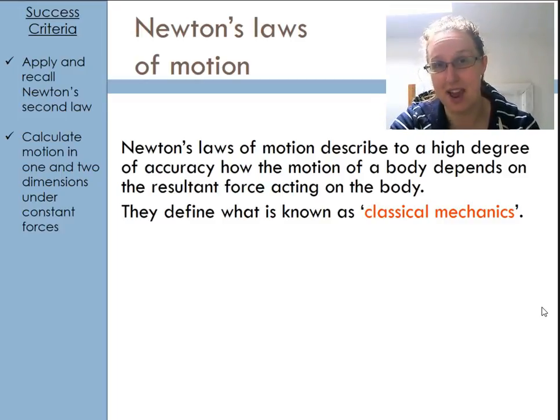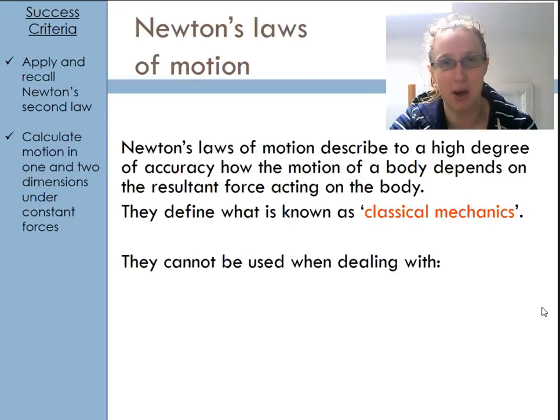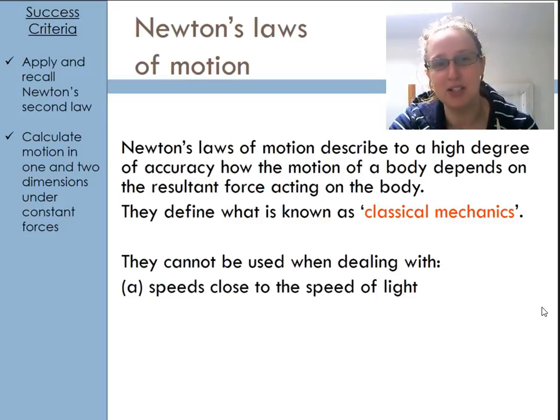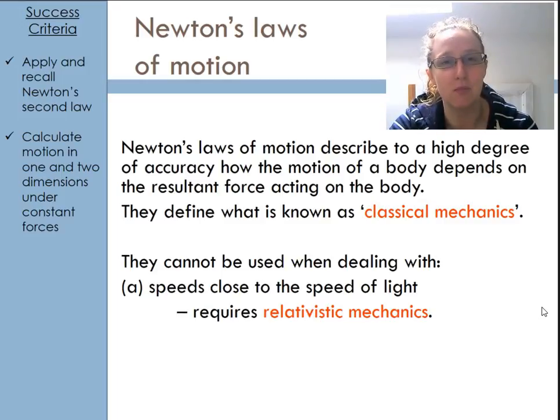But Newton's laws fall down once we get into different parts of physics. The two places that it particularly falls down is when we have speeds that are close to the speed of light, so things travelling really, really fast. We need to use something called relativistic mechanics instead. Now, the reason for the exam that we cannot use Newton's laws for objects travelling near the speed of light, and this is just for the exam, this isn't quite true but it's what the exam board would want you to say, is that as their speed increases, so does their mass.